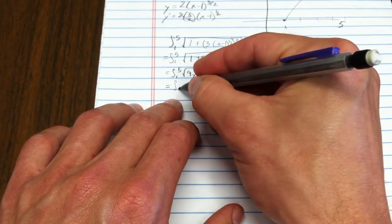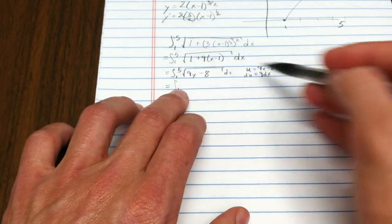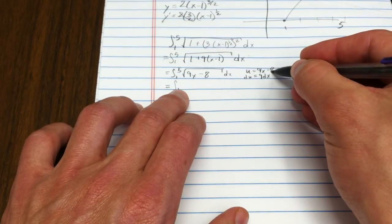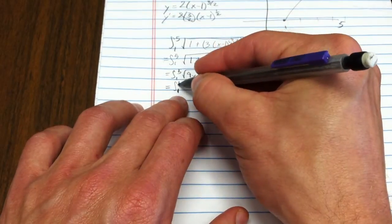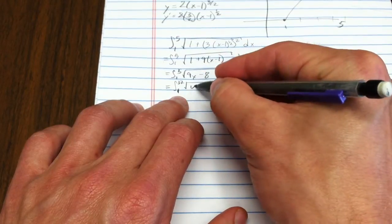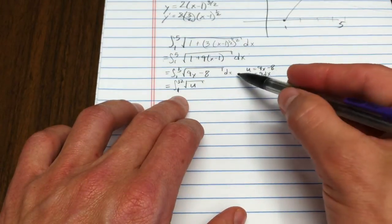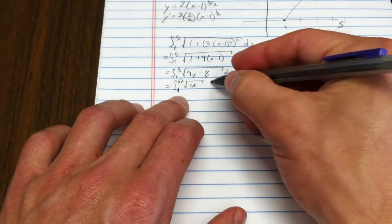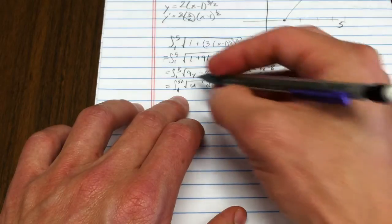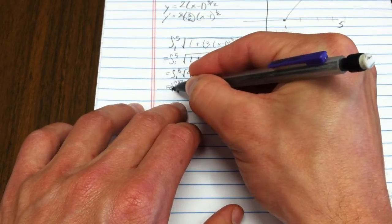If I change my limits of integration, that becomes 1. If I put in 5 for x, that would get me 45 minus 8, which is 37. Now that's the integral of u^(1/2). dx equals du divided by 9, so I'll put 1/9 out front.